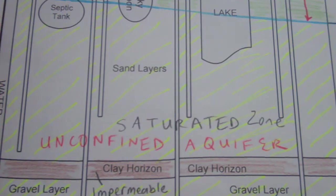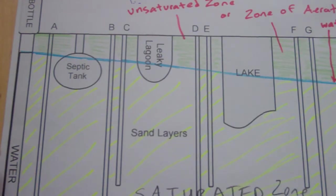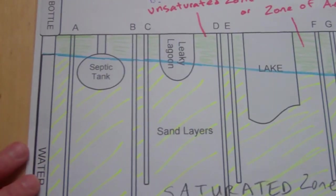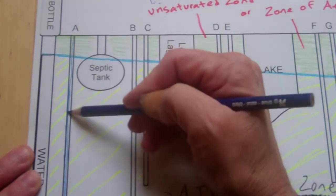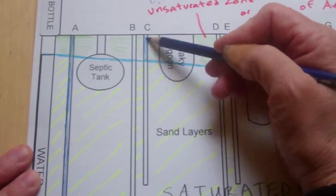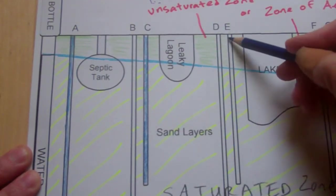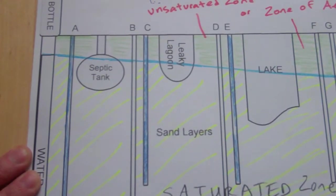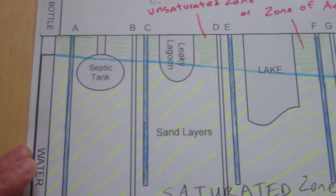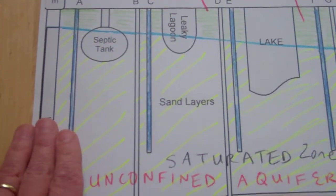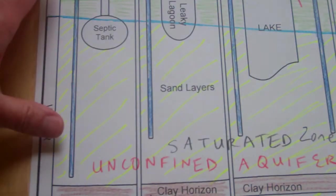There are lots of wells along the top, all drawing water. Wells A, C, E, and F are all drawing from the unconfined aquifer. Since they all use the same aquifer, if you pump a lot from one of them you are drawing from the same source — and heavy use could actually lower the water table.